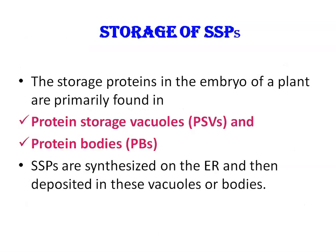Next is storage of seed storage proteins — where they are stored in the seed. Seed storage proteins are specifically synthesized during seed maturation and accumulate in the endosperm of monocots or in the cotyledons and embryo of dicots. Storage proteins in the embryo are primarily found in protein storage vacuoles and protein bodies. Protein storage vacuoles are found in terminally differentiated cells of the embryo, and protein bodies are formed directly within the endoplasmic reticulum. Storage proteins are synthesized on the endoplasmic reticulum and then deposited in these vacuoles or bodies, serving as a reservoir of amino acids for the plant to use later in development.